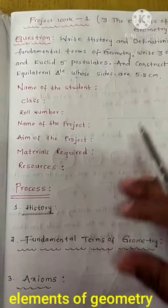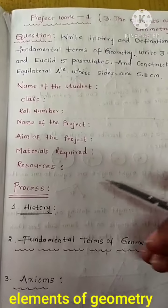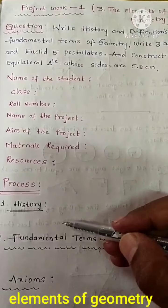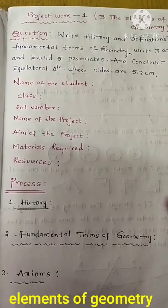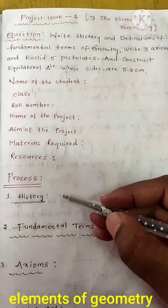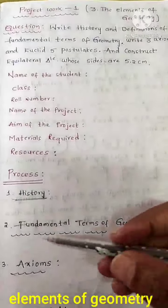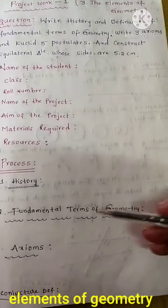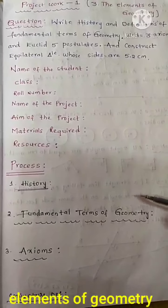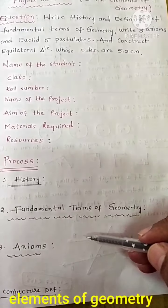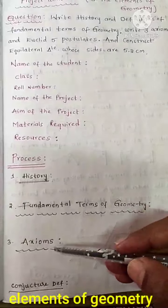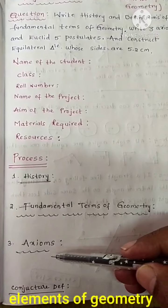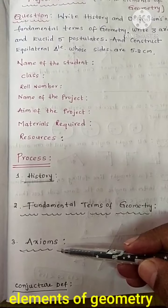Now the process. In the notebook, the first heading is History — write the history as mentioned in the textbook. The second heading is Fundamental Terms of Geometry. The third section is Axioms — write the definition and about 2 or 3 axioms.